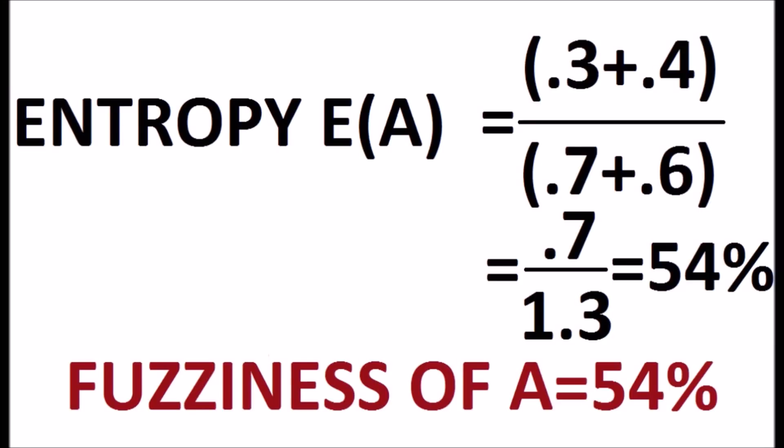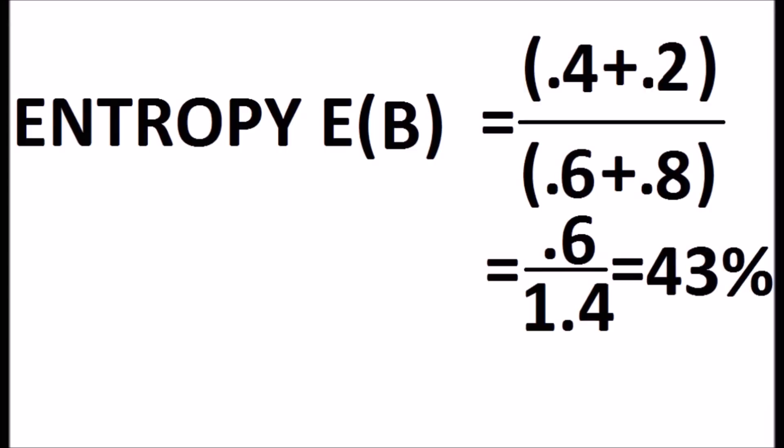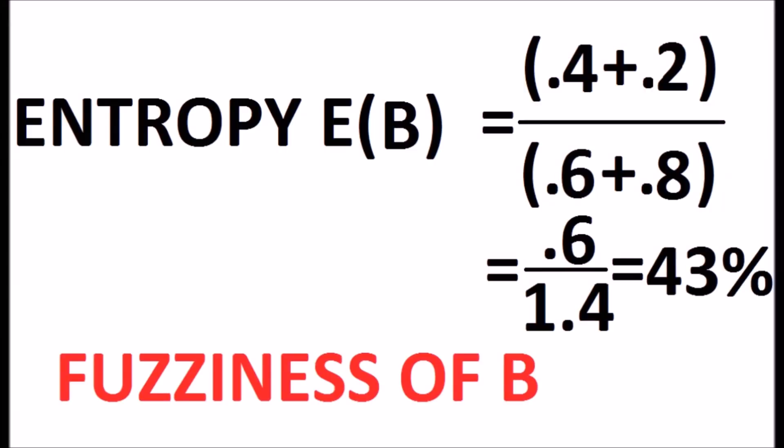Similarly, the entropy of fuzzy set B is calculated as 0.4 plus 0.2 divided by 0.6 plus 0.8 which is equal to 0.6 over 1.4 which is equal to 43%. So, the fuzziness of the fuzzy set B is 43%. That is the entropy of the fuzzy set.